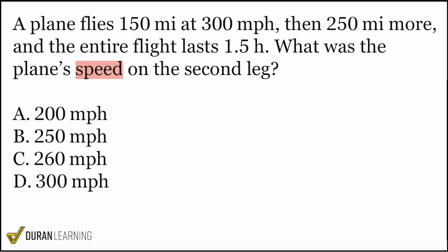So we want rate. Now, on top of that, specifically the rate for what? Are we looking for the entire flight, the first part, or the second part? What is this rate specifically tied to? The second leg — it's right there in the sentence. So we are specifically looking for the rate for the second leg.